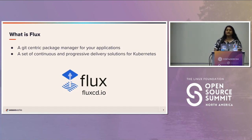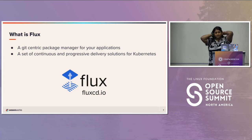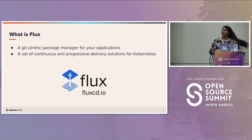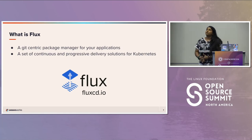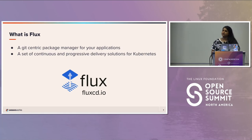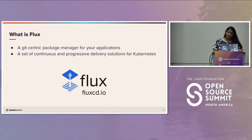Flux is a Git-centric package manager for your applications, and it's a set of continuous and progressive delivery solutions for Kubernetes. It was really created with Kubernetes in mind, so it works with everything you're probably already using — the common Kubernetes tooling you're already using.